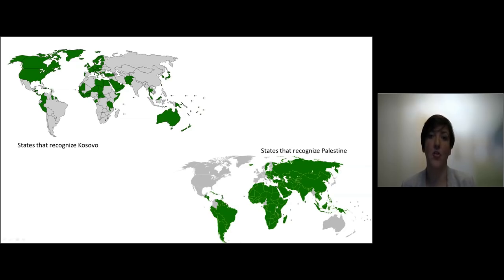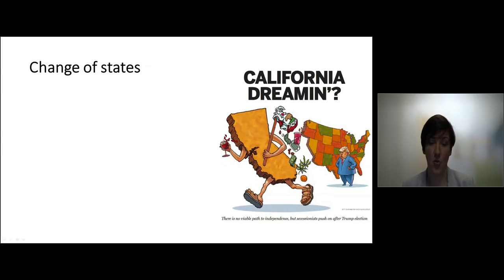And these pictures show the political nature of recognition. These pictures are maps from 2016, and they show how many states recognized Kosovo as a state and how many states recognize Palestine as a state. And what you see is that very often a state either recognizes one of two, and that has to do with international politics.